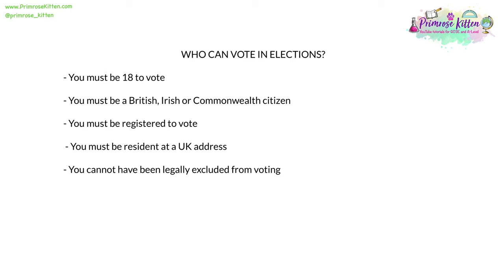So who can vote in elections? You must be 18 to vote, a British, Irish or Commonwealth citizen, and you must be registered to vote — a process which takes about 3 minutes. You must be resident at a UK address, or be living abroad with British citizenship. And you cannot have been legally excluded from voting, for example by committing a serious criminal offence or electoral fraud.